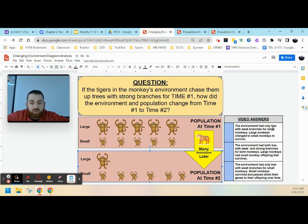The environment only had trees with weak branches for small monkeys. So we're talking about the environment changing. Large monkeys changed to small monkeys in order to survive. So our large monkeys became the small monkeys. That's option one.